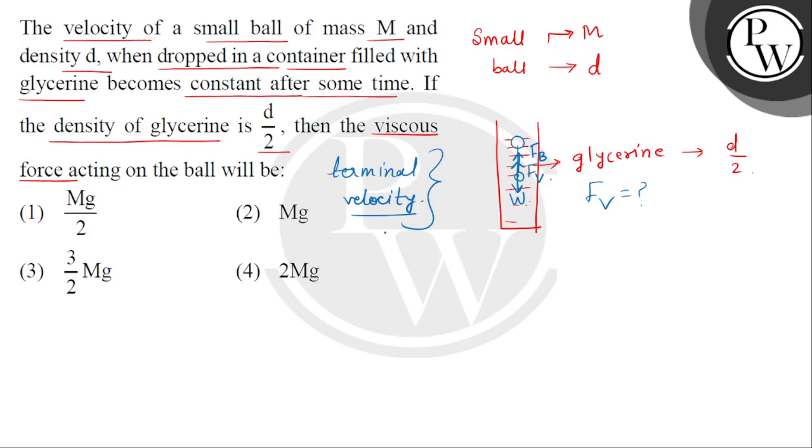तो terminal velocity कब आ जाएगी इस ball में? जबकि ball पर लगने वाले net forces का sum आ जाए हमारे पास में एक net zero vector, null vector. So यहाँ पर हम बोल सकते हैं, the downward force is weight of the ball, upward forces का sum हो जाएगा, buoyant force plus viscous force. तो हमारे पास viscous force का answer आ जाएगा, weight of the ball minus the buoyant force.